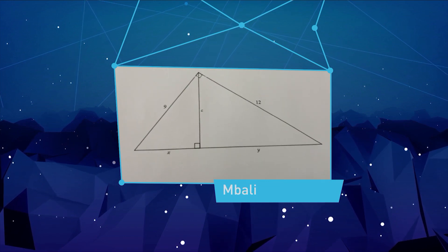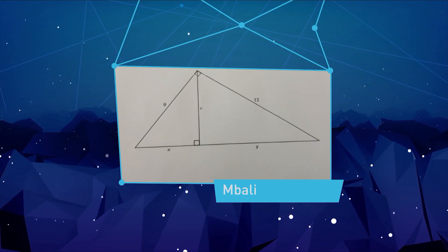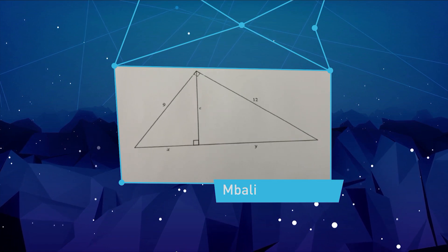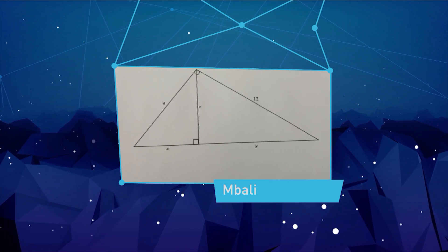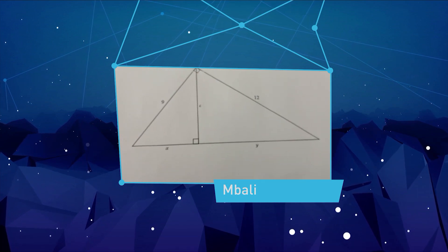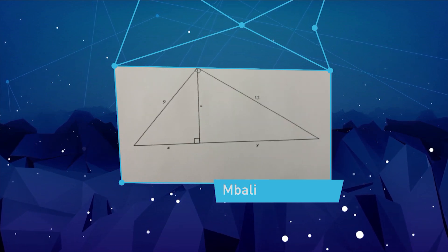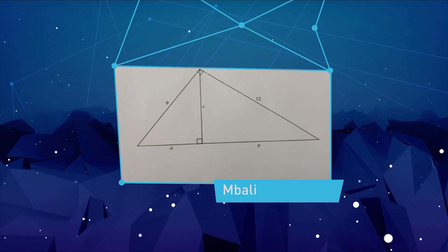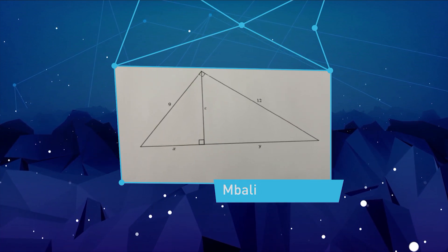Hi Tenfold, my name is Mbali and I'm from Soweto. I would really like you guys to help me with this question. It reads as follows: in the triangle below a height is drawn to the hypotenuse, find x plus y plus z. I'd really appreciate your help. Thank you, bye.